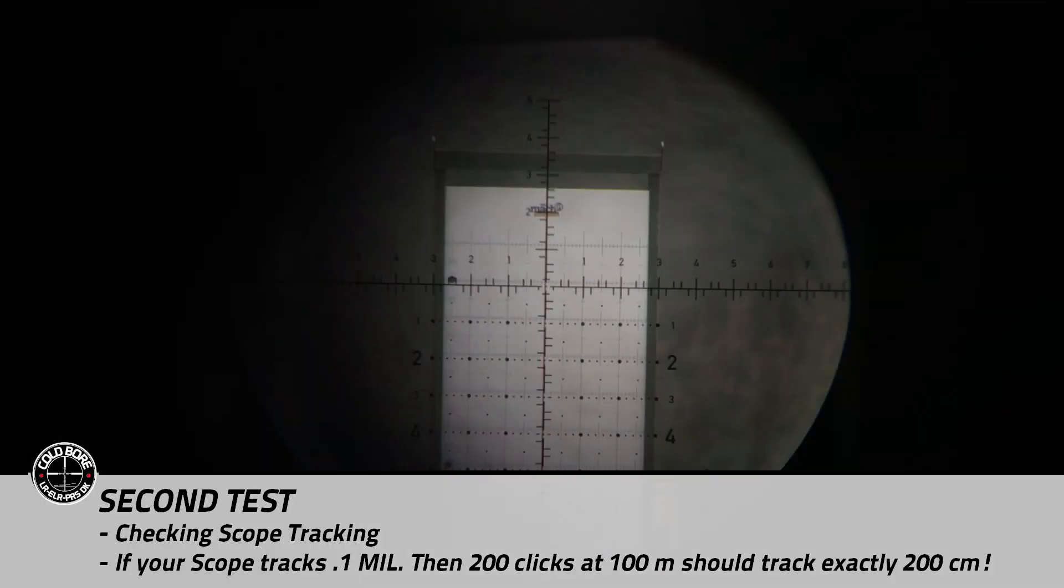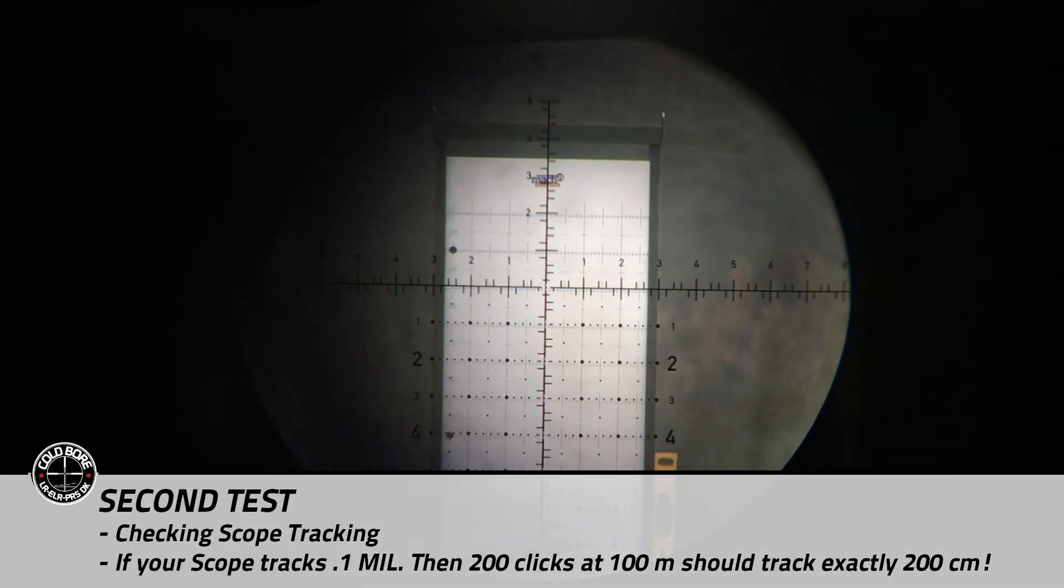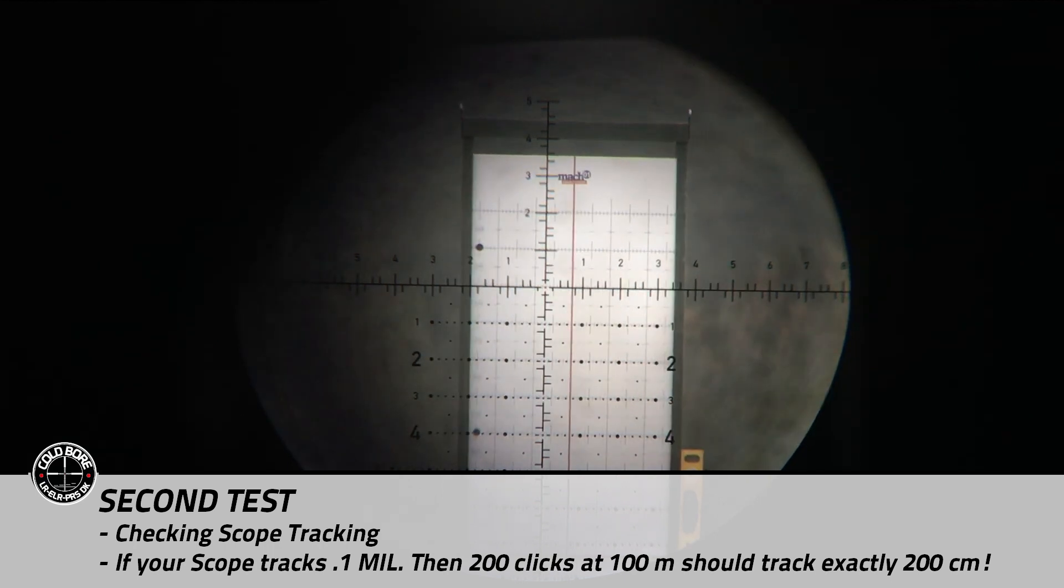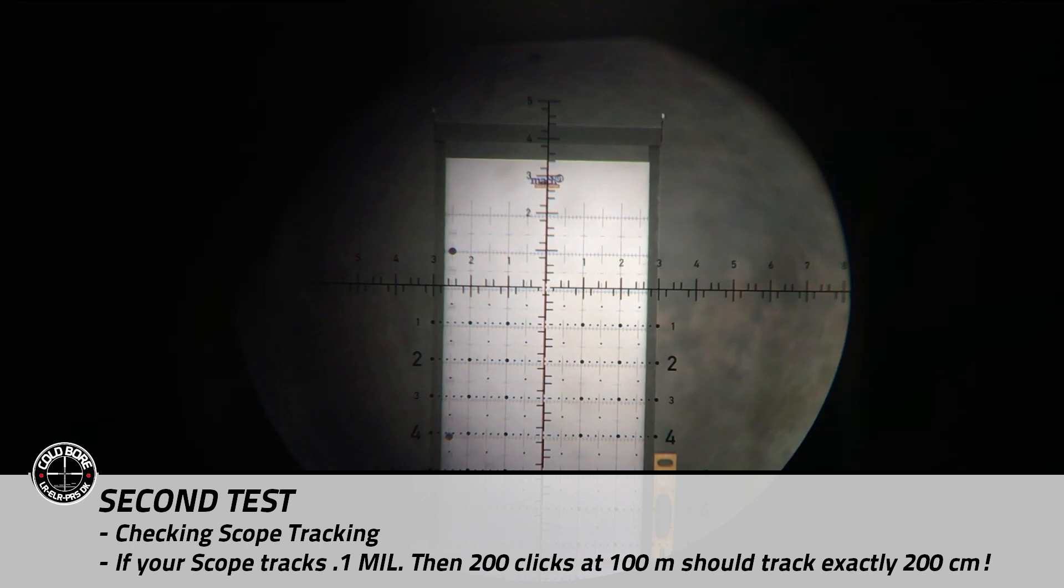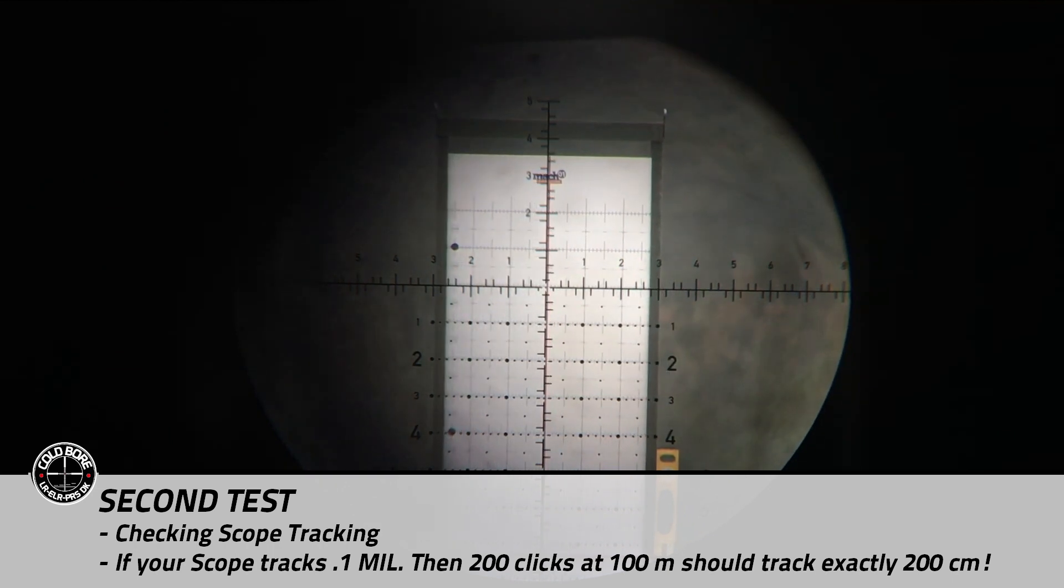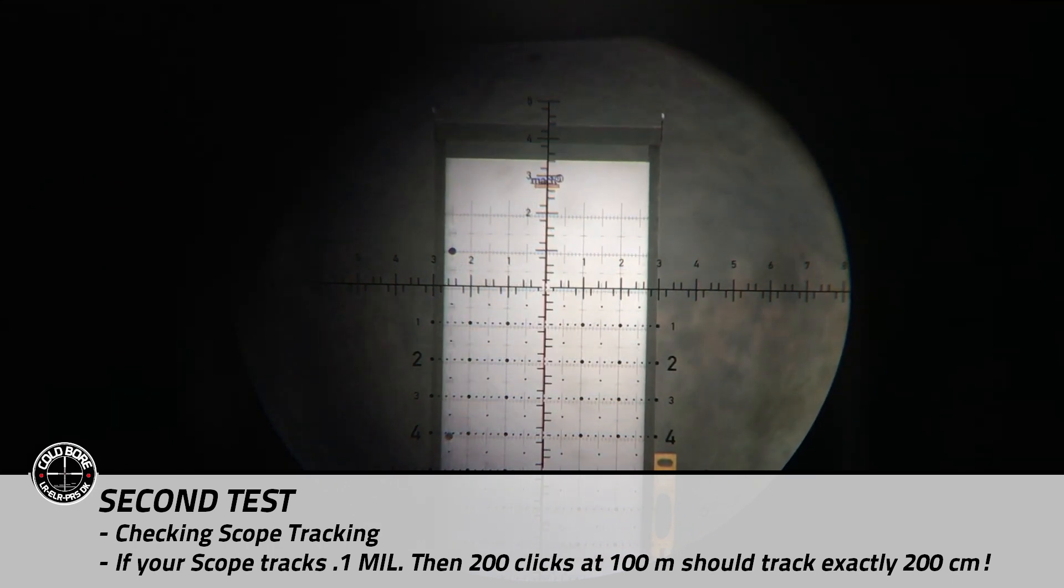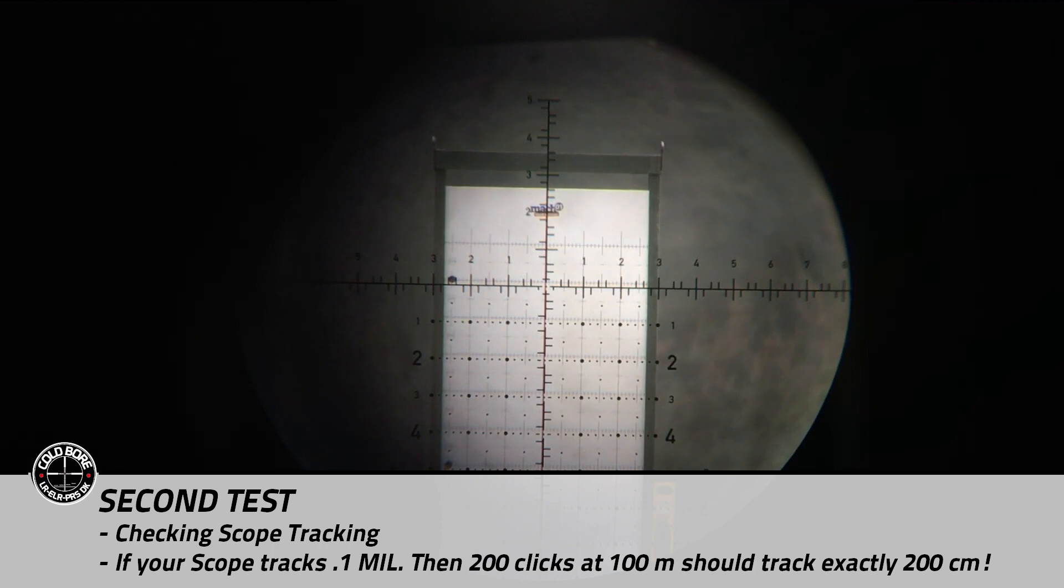The second thing you test with a tall target test is to see if your scope tracking of your rifle scope is precise. So if your scope says that one click is one centimeter on 100 meters or 0.1 mil then it sure as hell should track 200 centimeters with 200 clicks at 100 meters and not 202 or 198 clicks.